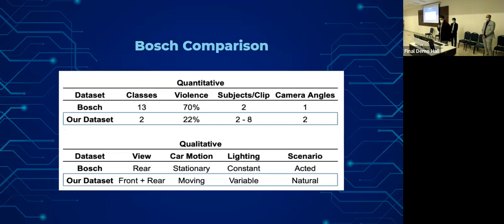Here we have two tables: the table on the top is a quantitative comparison and the table at the bottom is a qualitative comparison. Notably, the Bosch dataset is extremely biased towards violence which isn't really representative of real daily life scenarios, unlike our dataset. Our dataset is also far more complex and exhaustive with some clips having four times as many subjects compared to Bosch which only has at most two subjects per clip.